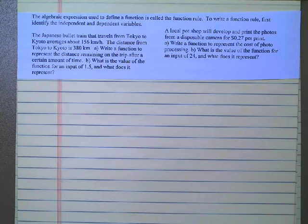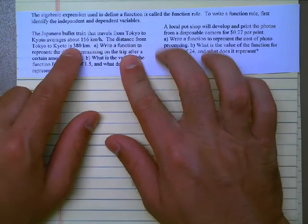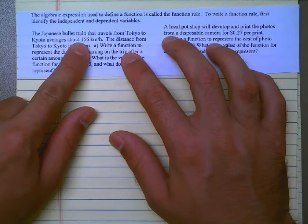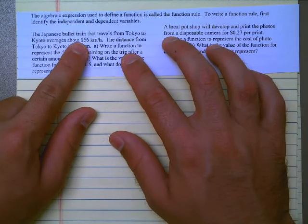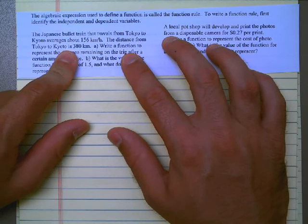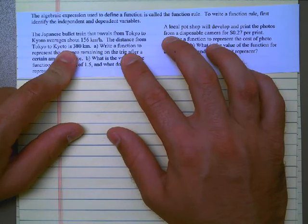Our first step to write a function rule is to figure out what are the two things we're talking about in the relationship. What's the independent variable and what's the dependent variable? The Japanese bullet train that travels from Tokyo to Kyoto averages about 156 kilometers per hour. The distance from Tokyo to Kyoto is 380 kilometers.